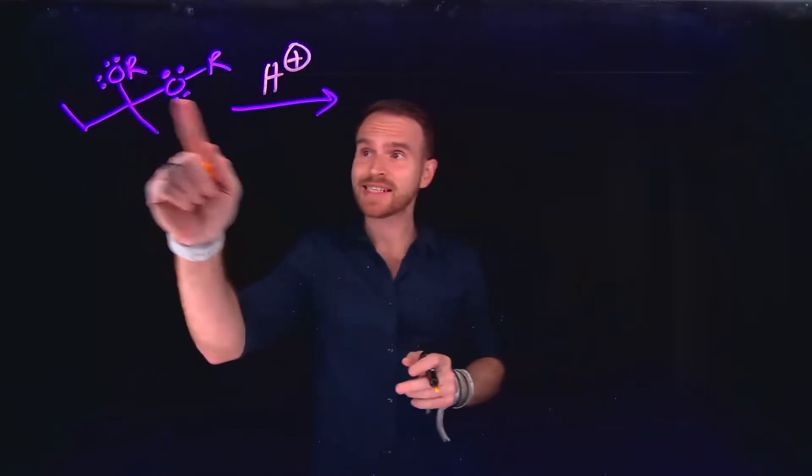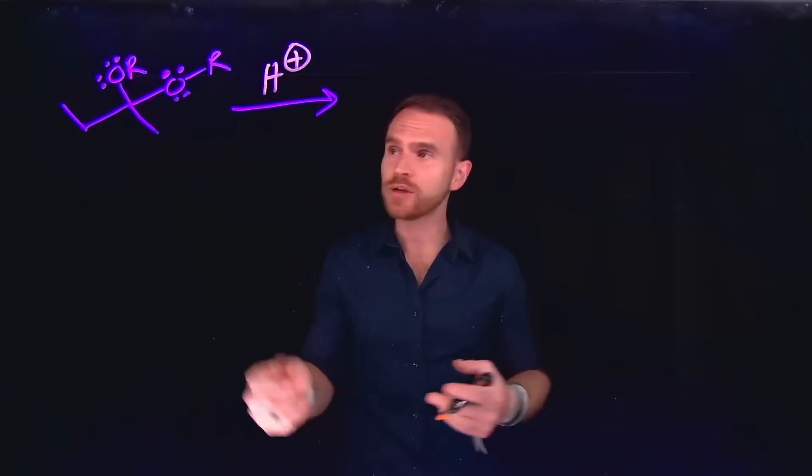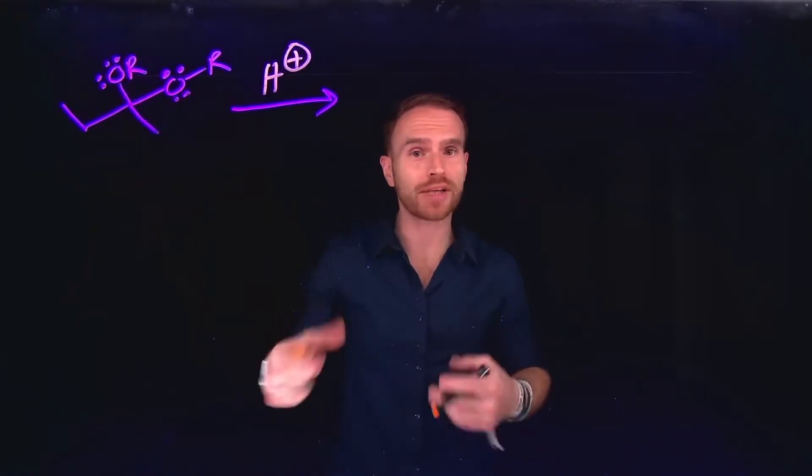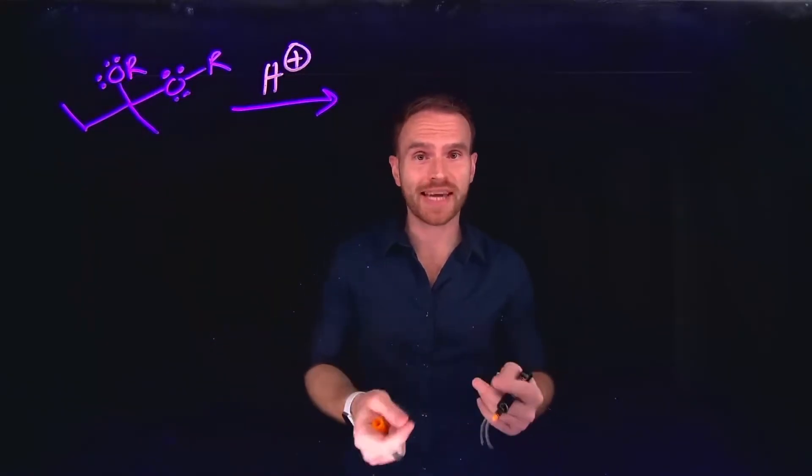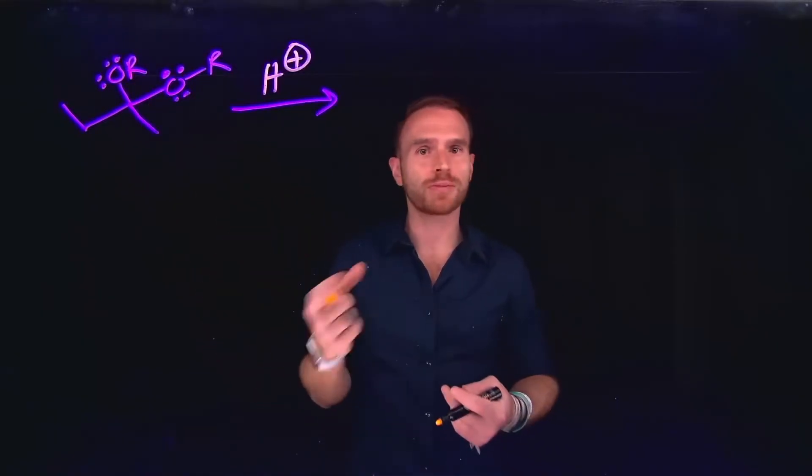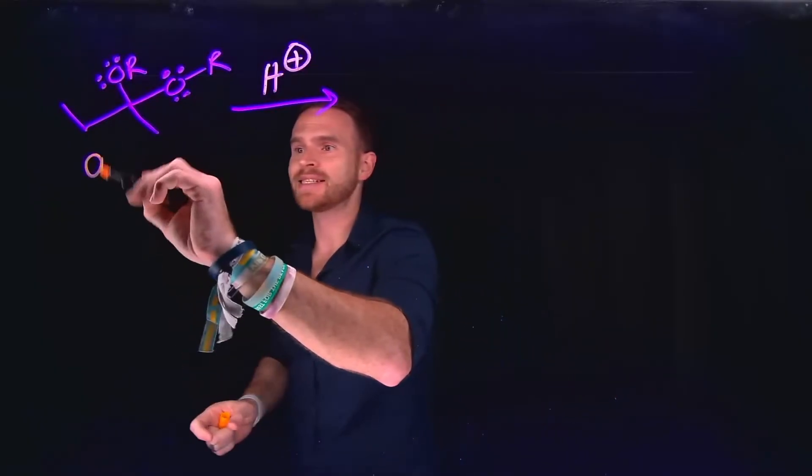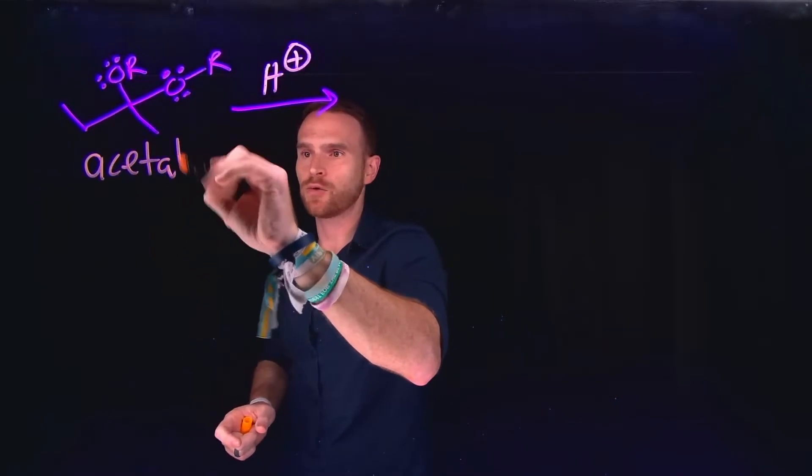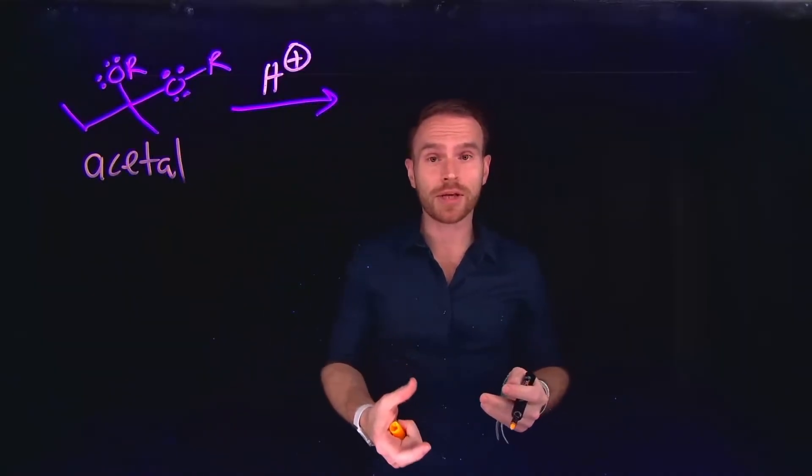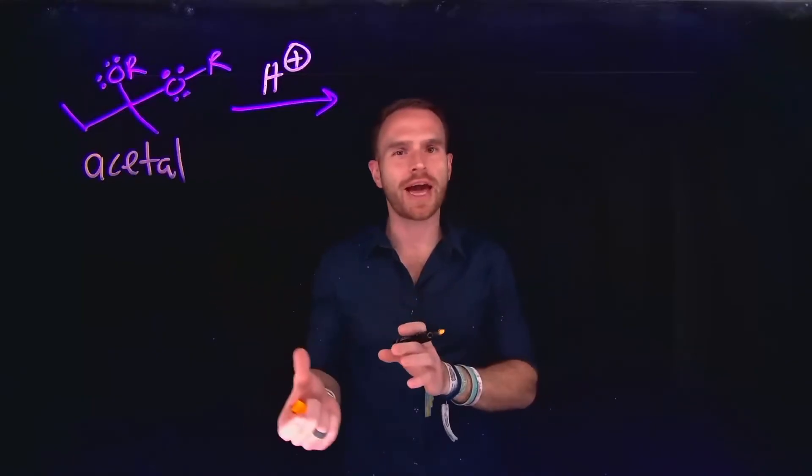Now, importantly, acetals can be deprotected or removed from compounds. We use them as functional groups that protect, and therefore we call them protecting groups when performing synthesis. So if we have a position where we needed an alcohol or some carbonyl carbon that we didn't want to react, we could turn it into an acetal to act as a protecting group. Now, importantly, this would mean that we would subsequently need to remove it once we're done doing whatever sort of reaction we wanted to do.